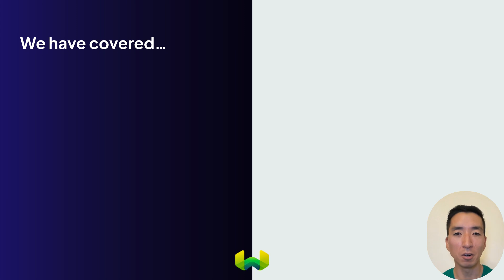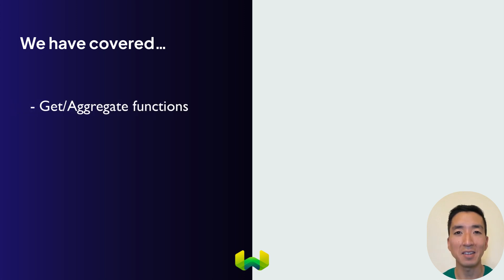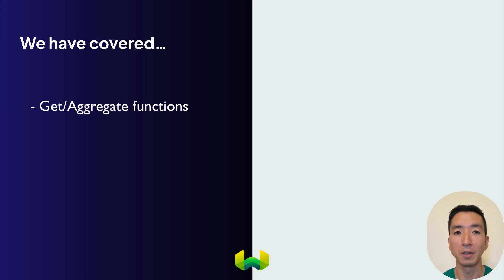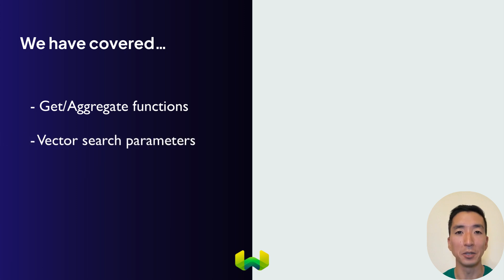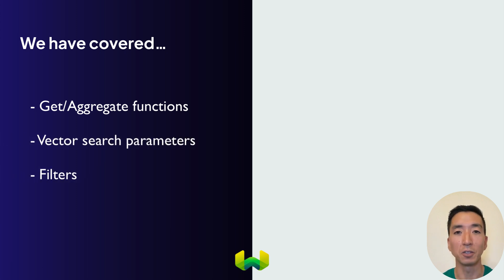We've covered a lot of ground in this unit already. You've learned how to use get and aggregate functions to retrieve objects or compile information. You've seen different ways of performing vector searches like near vector, near object, and near text, and learned how to use filters such as where, limit, and offset.